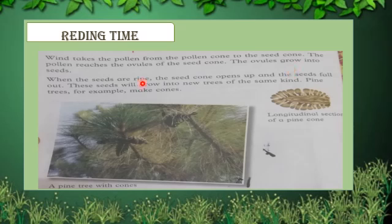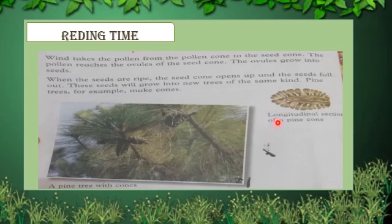When the seeds are ripe, the seed cones open up and the seeds fall out. These seeds will grow into new trees of the same kind. Pine trees, for example, make cones. A pine tree has cones — you can see here the longitudinal section of a pine cone.